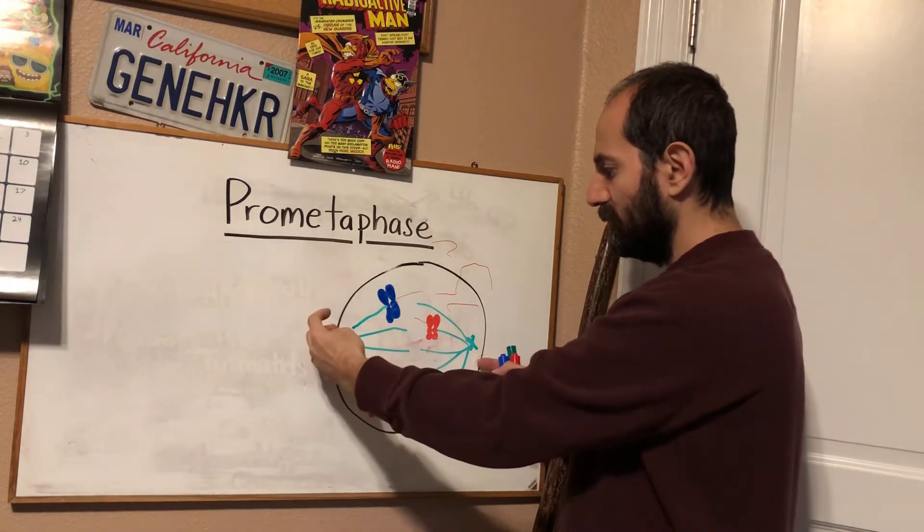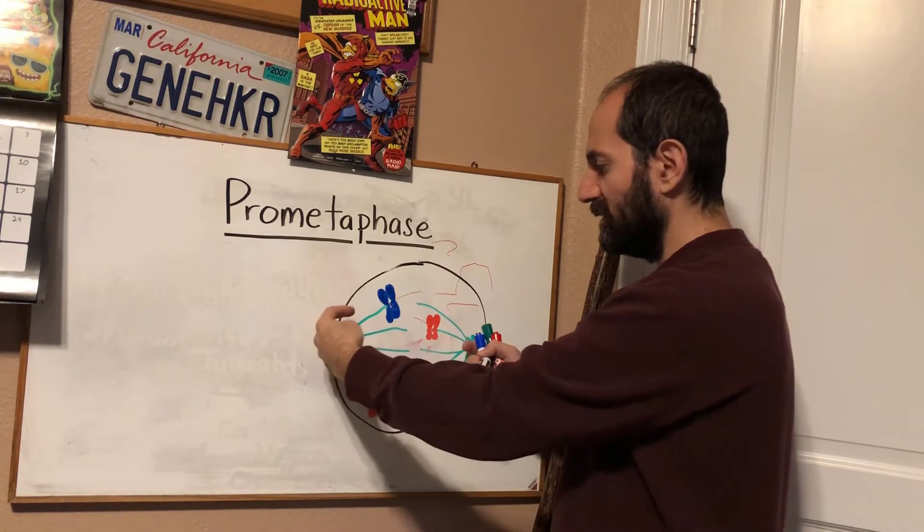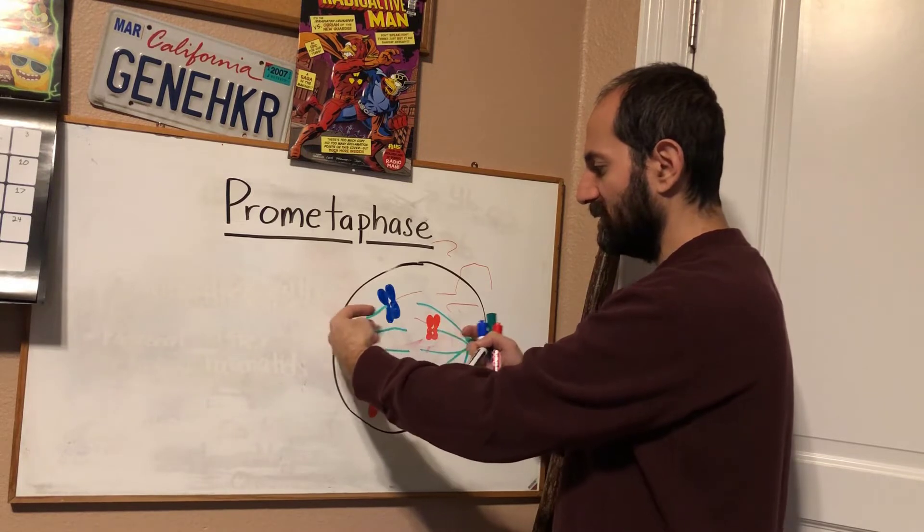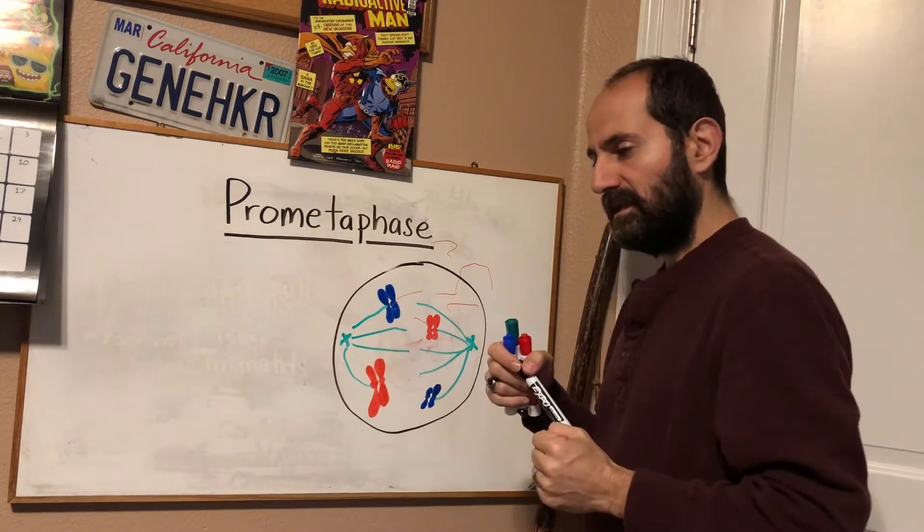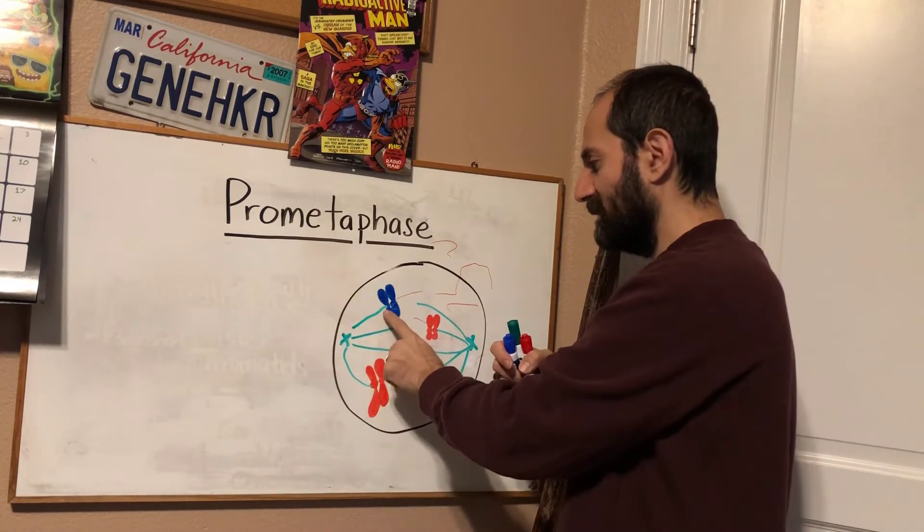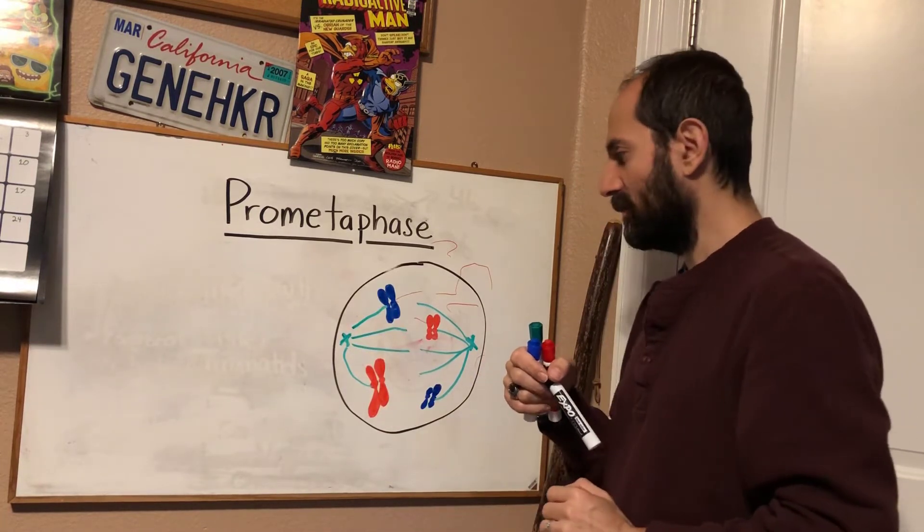And microtubules have grown. Remember the mitotic spindle, these microtubules that are growing out from there, from the centrioles. Those microtubules have now attached to the sister chromatid pairs.